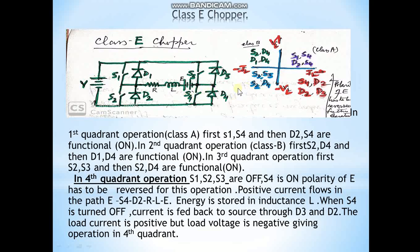For third quadrant operation, switches S2 and S3 are on and current flows from right to left, meaning load current is negative and load voltage is negative. When S2 and D4 are on, the inductor discharges through that path and load current remains negative.